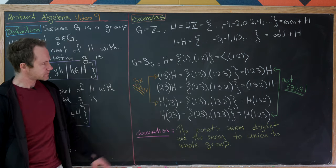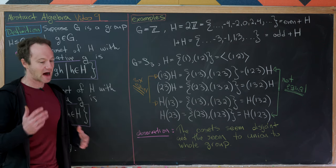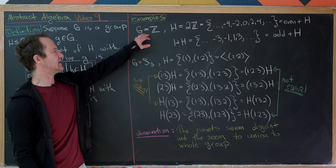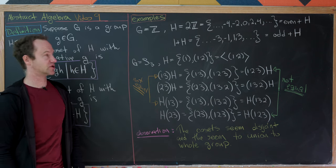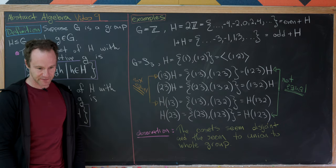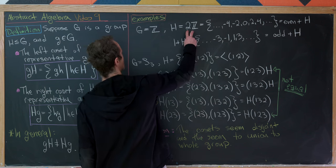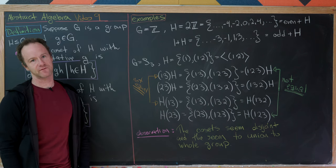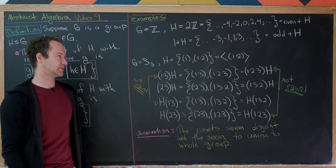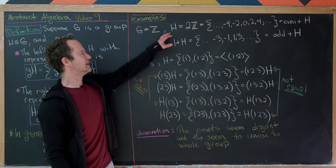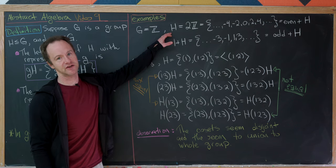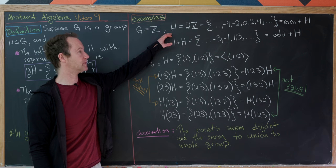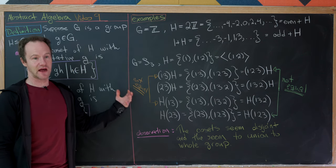Now let's look at some examples. This first example gives us motivation behind the notion of a coset and is built out of even and odd numbers. Let G be the additive group of integers, and H be the cyclic group generated by the number 2 — that is, 2Z — which is simply all even numbers. This is a subgroup, and notice it is its own coset under operation by the identity.